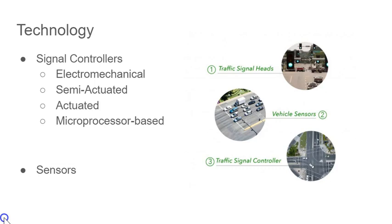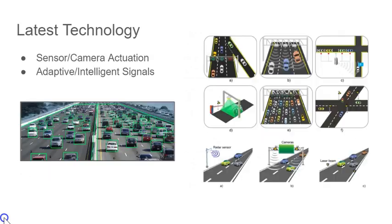Microprocessor-based controllers can be programmed with software to have different sets of functions. Other than controllers, the other technology is the fundamental equipment behind the coordination, such as traffic signal heads, lights, and a variety of other sensors. The latest technology in the realm of traffic signal coordination includes sensor and camera actuated technology, and adaptive or intelligent signals.